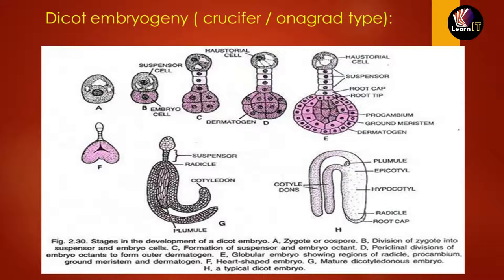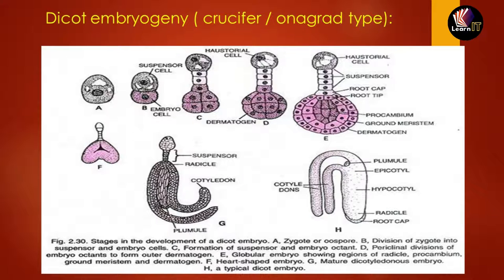As we can see from diagram A, it is basically a zygote. This zygote divides into two unequal cells: the larger suspensor cell towards the micropylar end, and a smaller embryo cell that grows toward the antipodal region. In images B and C, the suspensor cell undergoes transformation into a six to ten celled suspensor.